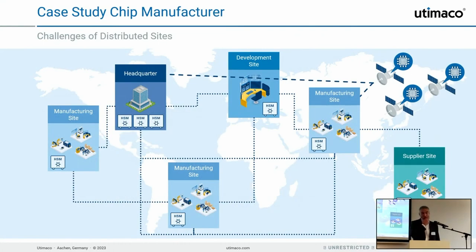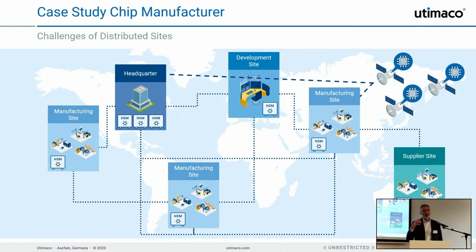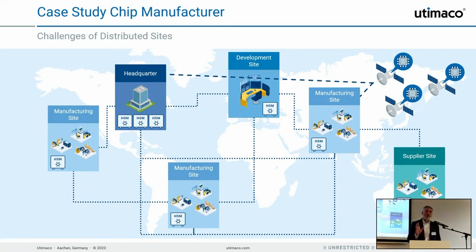Why is state handling a problem? Because typical use cases are distributed across different sites — headquarters, manufacturing sites, supply chain, and so on. You want maximum flexibility, generating signatures at headquarters, at manufacturing sites, and throughout supply chains. With distributed deployments, you no longer have a single counter; you must maintain a consistent counter across different sites. Since the risk of making a mistake here is complete loss of security, this is a very serious concern for these use cases.